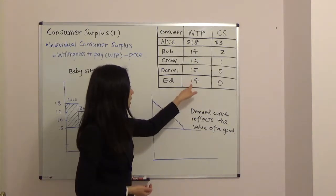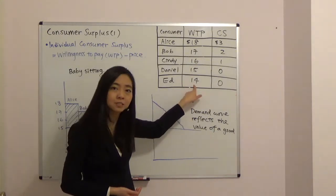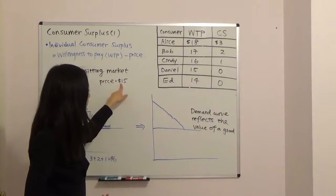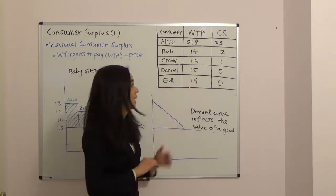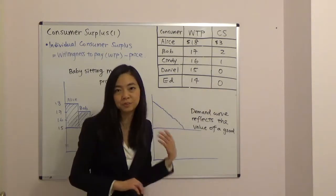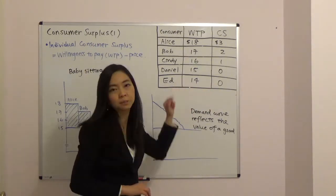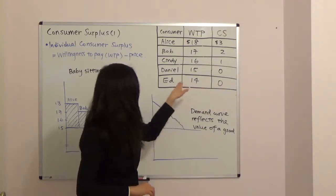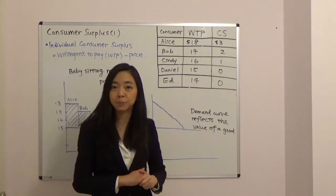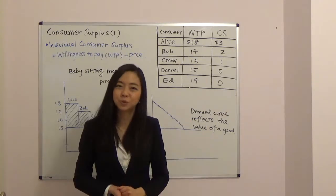So you can see Ed, his willingness to pay is only fourteen dollars, which is less than fifteen. Therefore Ed will not hire a babysitter and his consumer surplus will be zero because he is not participating in the market. Remember consumer surplus cannot be negative, it is zero for Ed. Whoever is not participating in the market, your consumer surplus will be zero.